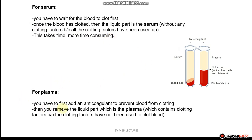In order to prepare plasma, you have to add an anticoagulant to prevent the blood from clotting. As depicted in this diagram, you add the anticoagulant into the test tube and this prevents the blood from clotting. Then you remove the liquid portion at the top, and this is plasma. This plasma contains clotting factors, because the clotting factors have not been used to clot the blood.